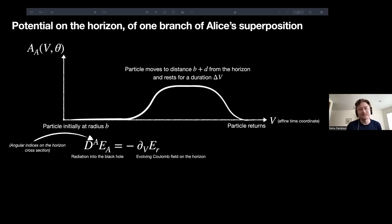So let's see why this is. If we look at the pullback of the electromagnetic potential from one branch of Alice's superposition, we can just consider a classical point charge following one trajectory of the two superposed trajectories. It produces the pullback of the electromagnetic potential. When the particle's initially at some radius r, it has some fixed value. Alice moves the particle to some new distance r plus D away from the horizon. This r is a Schwarzschild radial coordinate, and then holds it for some affine time along the horizon, delta V, and then brings it back to its initial position. So that's the same procedure that we saw for one branch of the superposition.